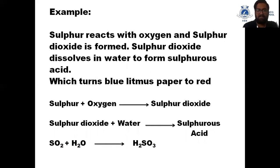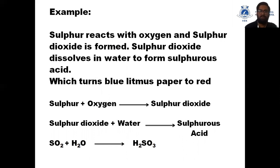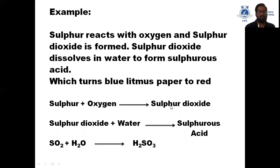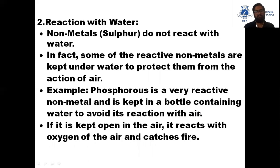For example, when sulfur reacts with oxygen, sulfur dioxide is formed. Sulfur dioxide then dissolves in water to form sulfurous acid. So the reaction is: sulfur reacts with oxygen to form sulfur dioxide, and sulfur dioxide dissolves in water to form sulfurous acid.